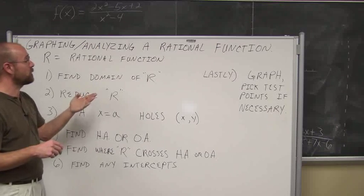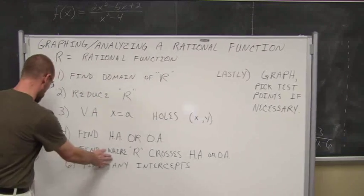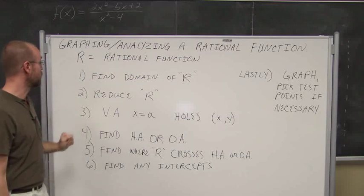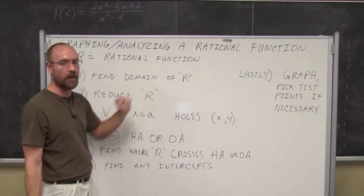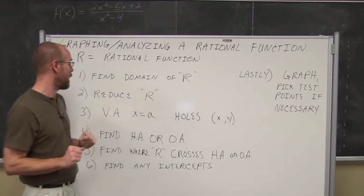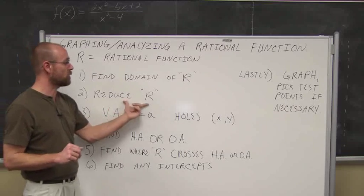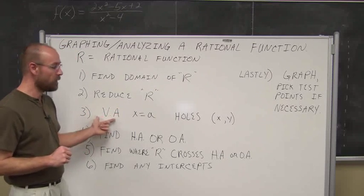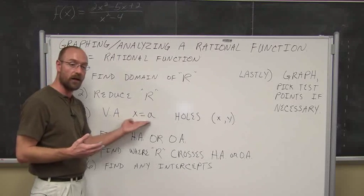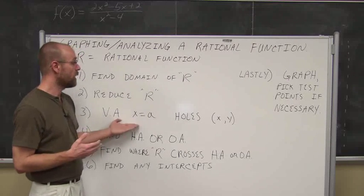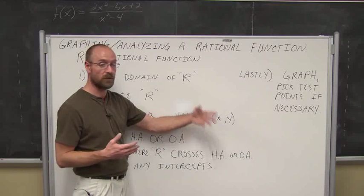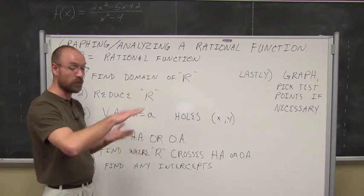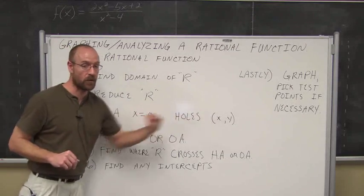So graphing and analyzing a rational function — these are the steps. Let r stand for a rational function. First, find the domain: what values make us divide by 0? Once we find our domain, we reduce r to lowest terms — simplify it like a fraction. Any values that don't reduce away from the denominator become our vertical asymptote, the value our graph can never cross. If some reduce away, they become holes — we plug that value into our reduced function to find the hole, written as an ordered pair.